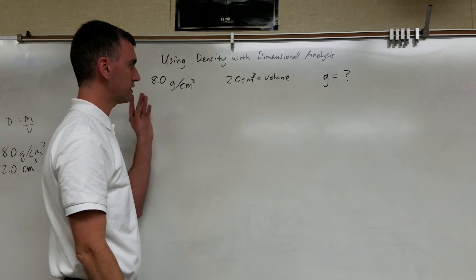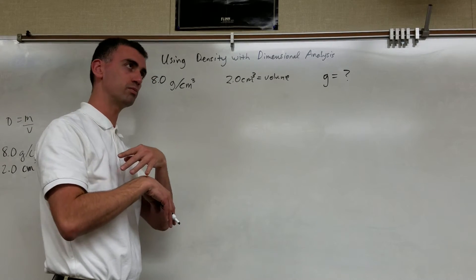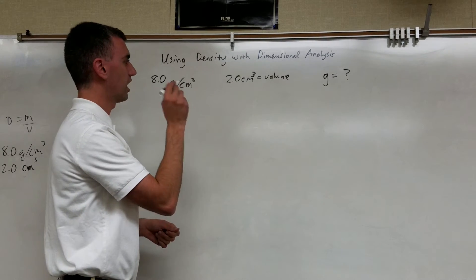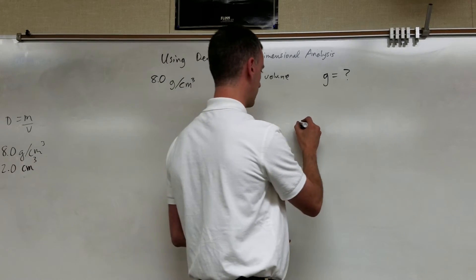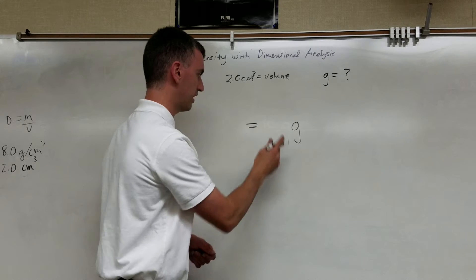So we're going to deal with the units in a way that you don't have to memorize any equation at all. You can simply use the units. So let's do this. I know I need an answer that ends in grams. So I'm going to just write g for grams and then an equal sign, and I'll put the answer here.